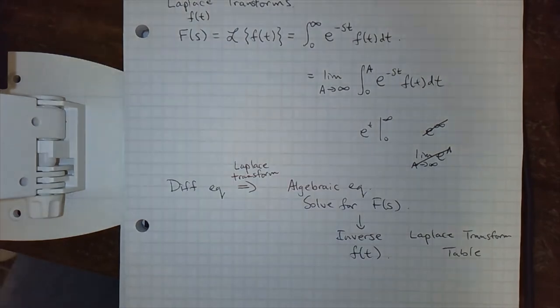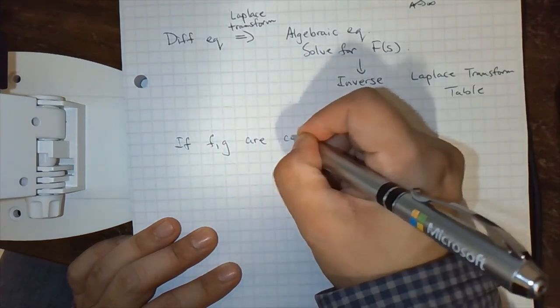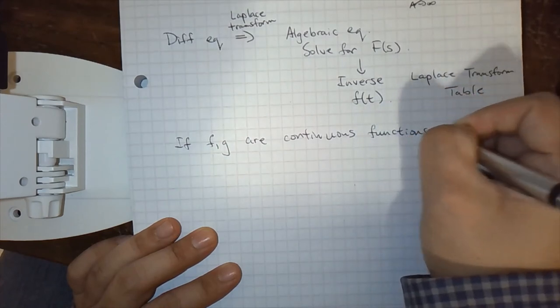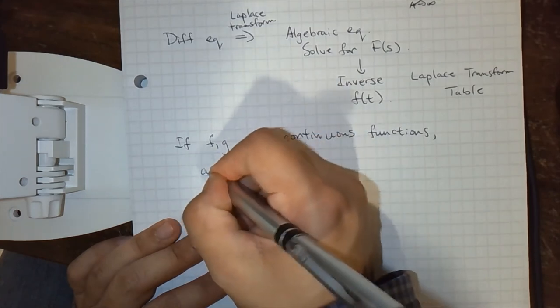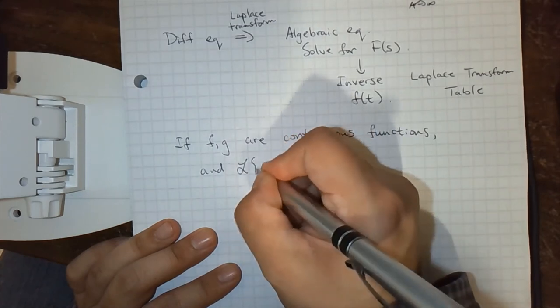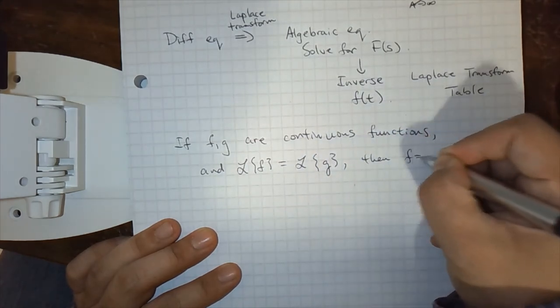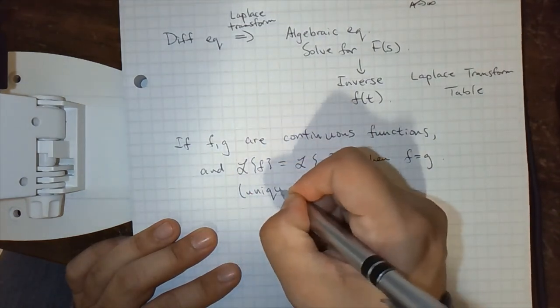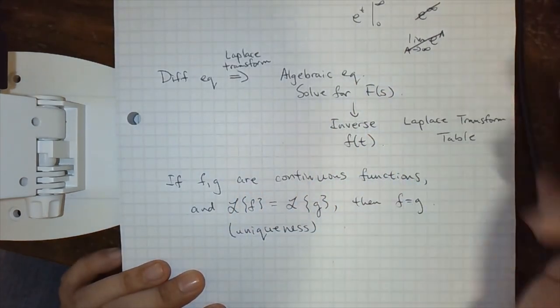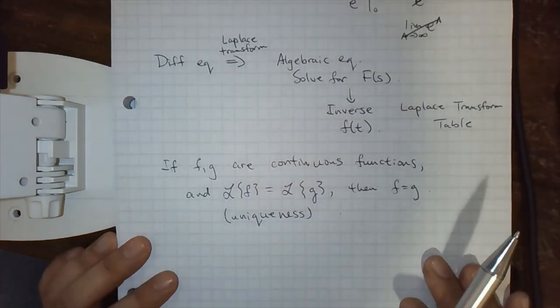And in order to for sure be able to do that, we also need this property, and that's if f and g are continuous functions. Continuous is the easiest version of nice. So this is good. This is pretty powerful. Continuous functions are easier to get than differentiable functions. And the Laplace transforms are the same. Then f equals g. And so what this gets us is uniqueness. This means if we take the Laplace transform of a differential equation, we don't lose information. We can solve for F(s), and then we can get a unique answer for f(t). And so that's good.